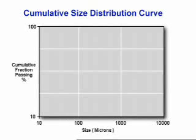The results from this analysis can be plotted on a graph. The horizontal axis represents the size in microns, and the vertical axis gives the percent of particles that pass through a screen of a given size.